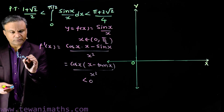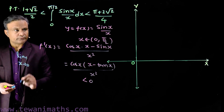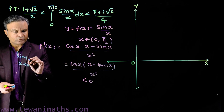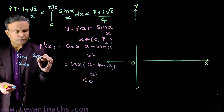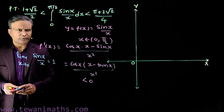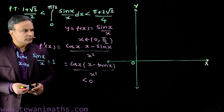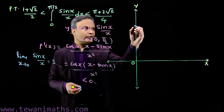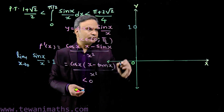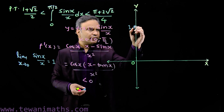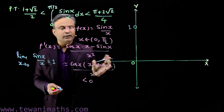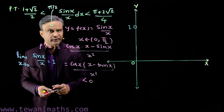Next, we find the limiting value of the function at x = 0. We find the limit as x tends to 0 of sin(x)/x, which equals 1. This is not exactly 1 but tends to 1, so we write it equal to 1. So at x = 0, the value of the function approaches 1. We place a blank point here because this point does not lie on the graph since we have an open interval at 0.